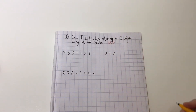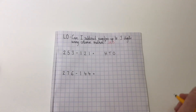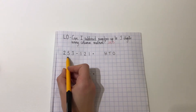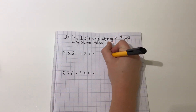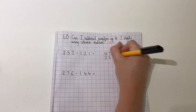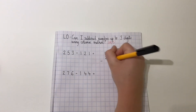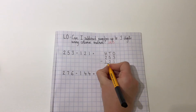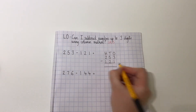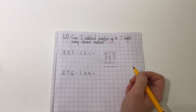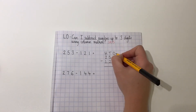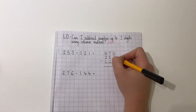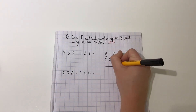Now remember for subtraction, the biggest number always comes first, so the biggest number will go at the top of the column. So our biggest number is 253, then take away 121. Now for column subtraction, we must always start at the ones. So we have three take away one, which is two.